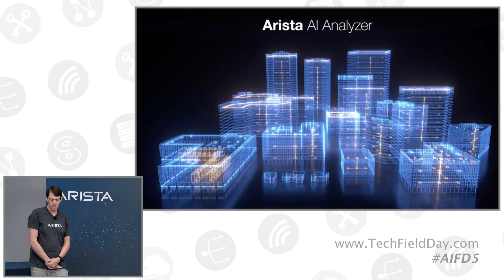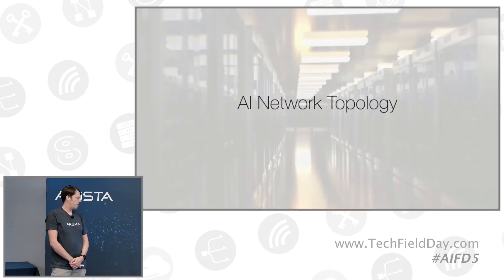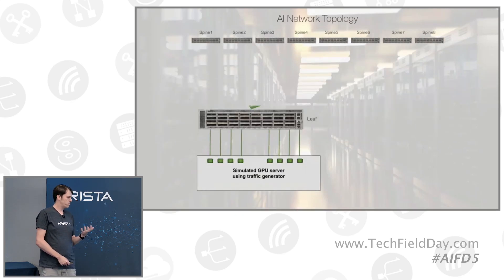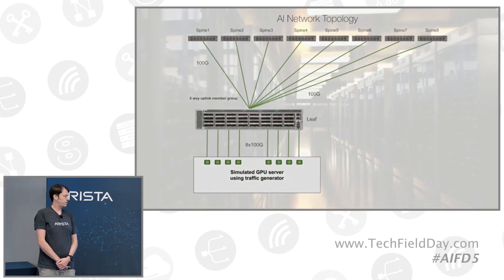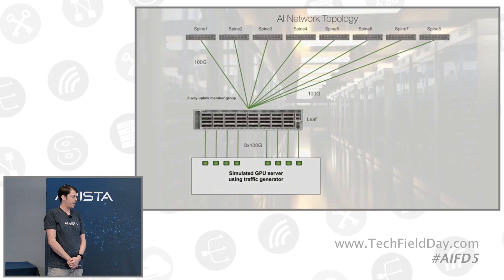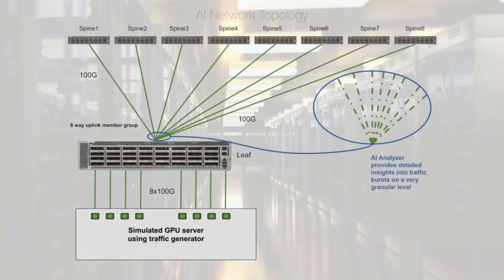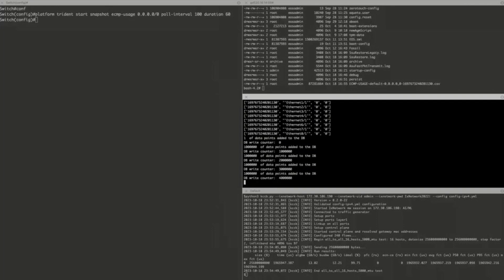So what does this look like? We prepared a demo here where we took one of our Arista leaf Tomahawk switches and connected that to simulated GPU servers from a traffic generator. All the traffic from the GPUs is being forwarded via ECMP to eight spines. Using AI Analyzer, we're able to capture traffic statistics at 100 microsecond intervals over the course of 60 seconds. We ran the traffic and then you export that data.